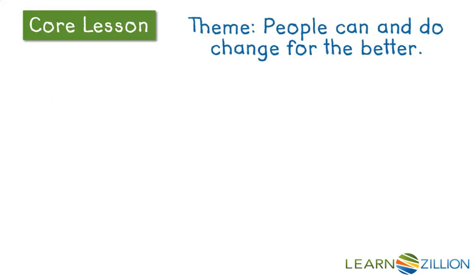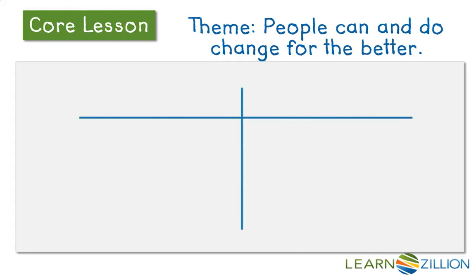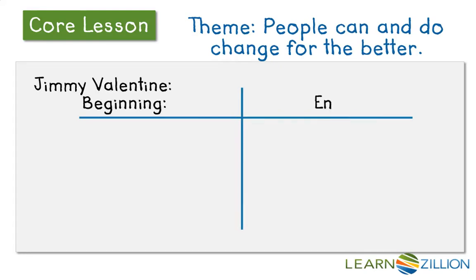So, theme: people can and do change for the better. What I'm going to do is make a T-chart — one line there, one line there — and I'm going to look at Jimmy Valentine in the beginning and in the end.